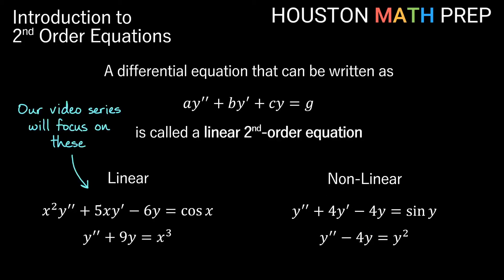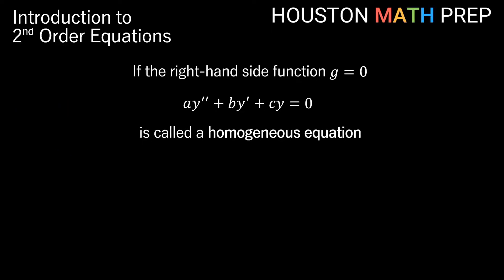For our video series on solving second order equations, we're going to focus on linear second order differential equations. We said that b, c, or g might be 0. When g is 0 — in other words, when the right-hand side function is 0 — we call this a homogeneous equation.